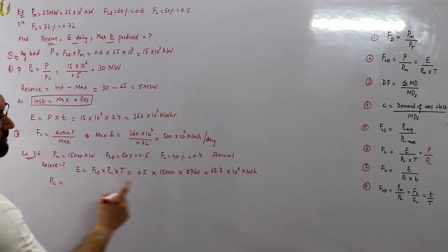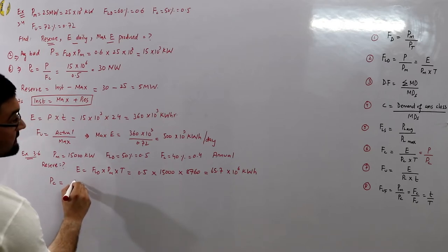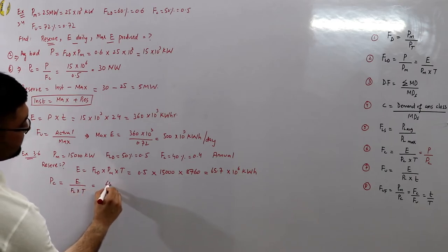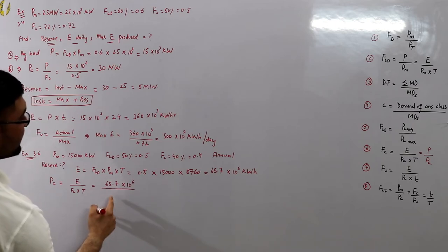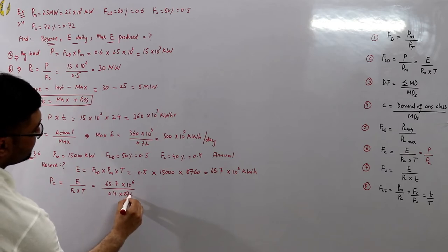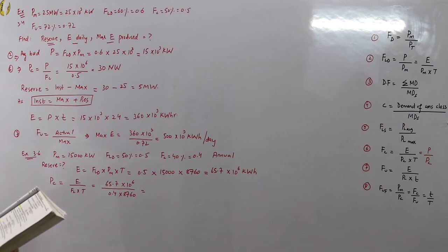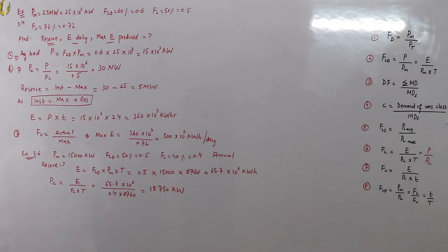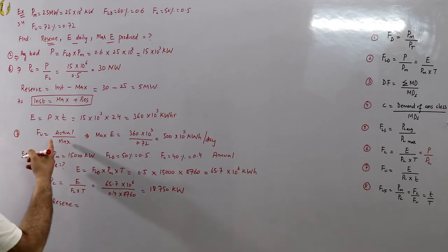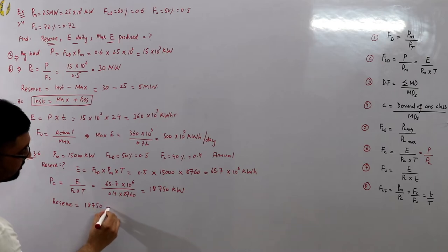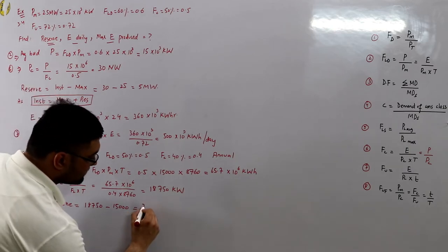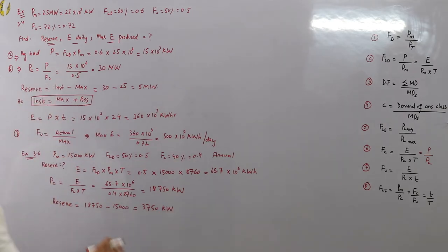Installed capacity PC = E ÷ (FC × T) = 65.7×10⁶ ÷ (0.4 × 8,760) = 18,750 kilowatts. The reserve capacity = installed capacity − maximum demand = 18,750 − 15,000 = 3,750 kilowatts.